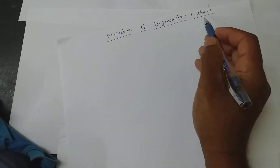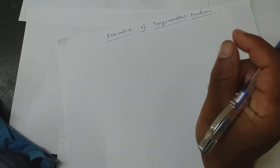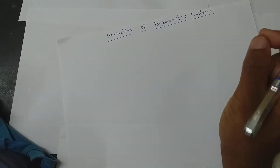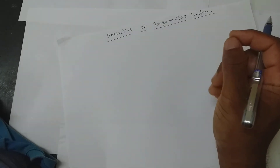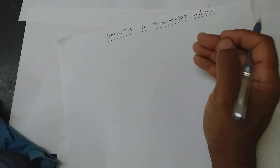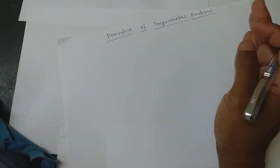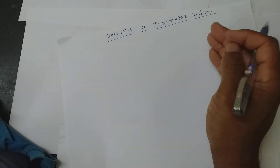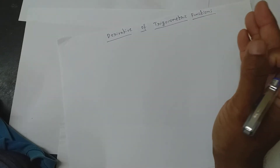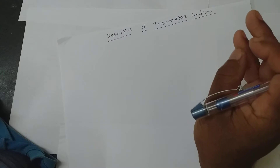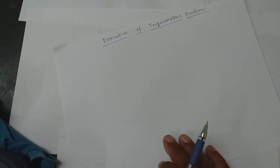Good morning students. This video will be all about derivatives of trigonometric functions — what is the derivative of trigonometric functions like sine, cos, and tan. You don't need the derivative of cosecant, secant, and cotangent — only these three. You need to know d/dx of sine x, cos x, and tan x. So let me write the formulas first.